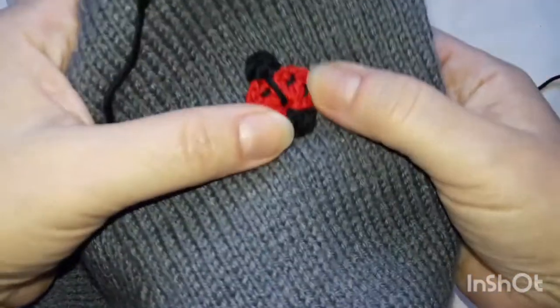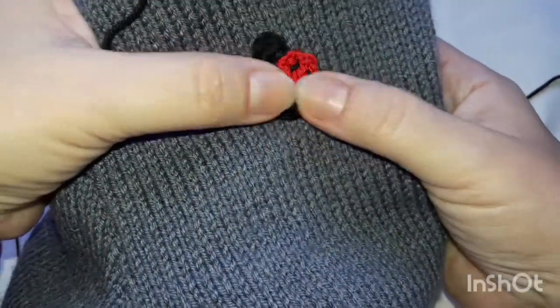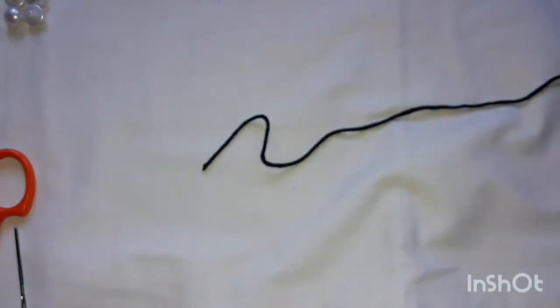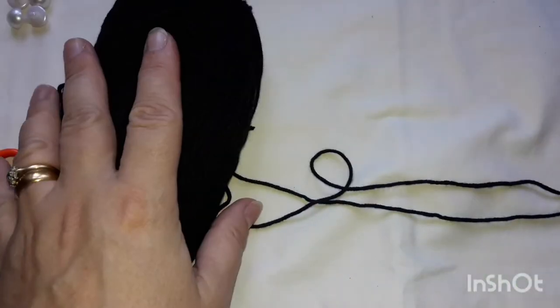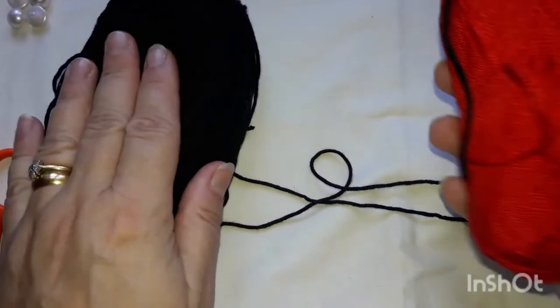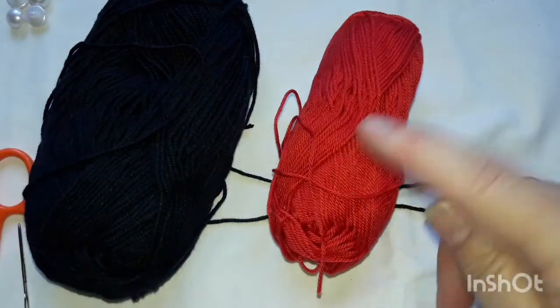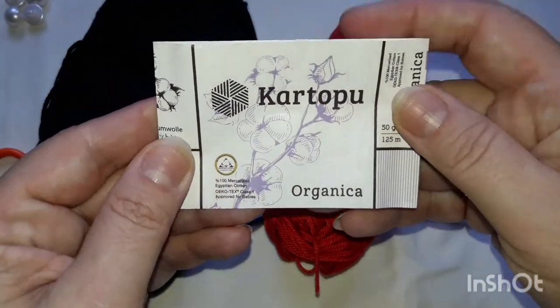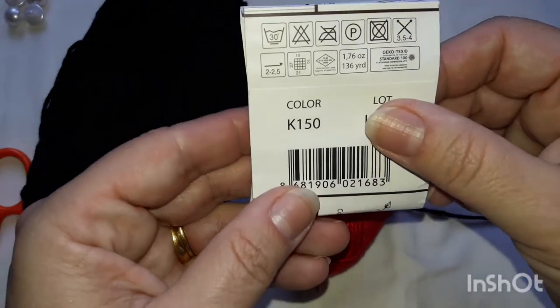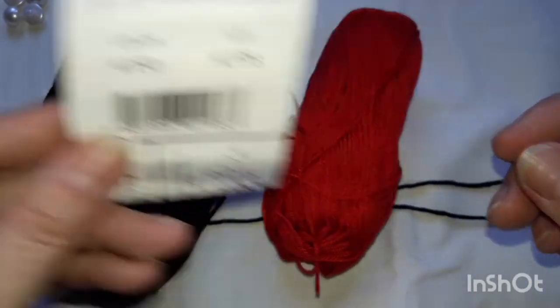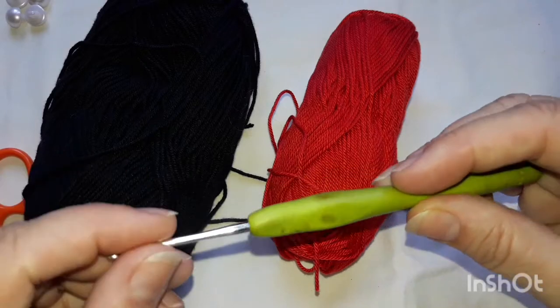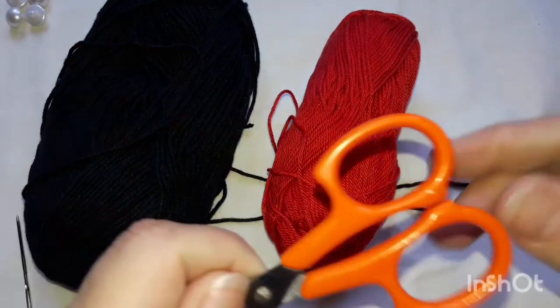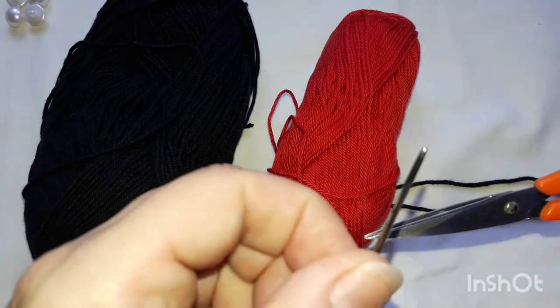And this is it here. So what you'll need today for this is some black cotton yarn, this is Alize Cotton Gold, and some red cotton yarn, this is Kartopu Organica color code K150. You'll need a 2.5mm hook, a pair of scissors, and a yarn needle.